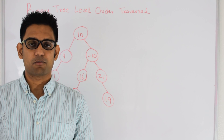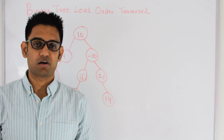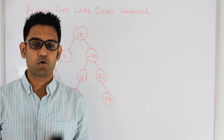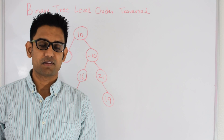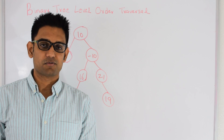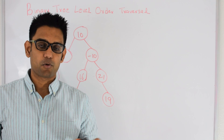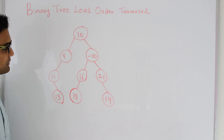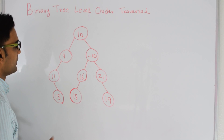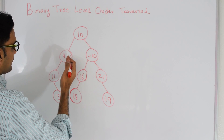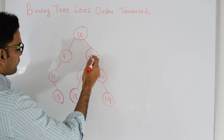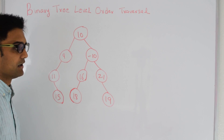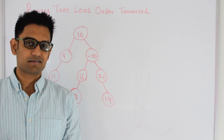In my previous video we talked about depth first traversals which are pre-order, in-order and post-order. What depth first traversal does is it goes into the depth of the tree before exploring the new breadth. For breadth first traversals, they explore every level before going to the next level. For this tree, for example, the pre-order traversal goes to 10, 9, 11, 15, and then explores the new path which is -10, 16, 18, 21 and 19. So that's pre-order traversal and that's a depth first traversal.